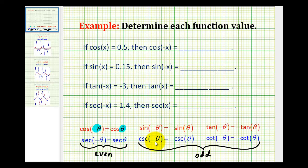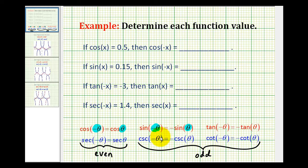The sine function, cosecant function, tangent function, and cotangent function are all odd functions, which means they have rotational symmetry about the origin. So the sine of negative theta is equal to the opposite of sine theta, meaning if we change the sign of the input, then the function values will be the opposite sign. This is true for sine, cosecant, tangent, and cotangent. We'll take a look at this graphically after we go through these examples.